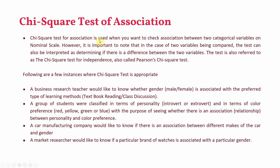Chi-square test for association is used when you want to check association between two categorical variables on the nominal scale. If you want to check for relationship between two variables on ordinal, continuous, interval, or ratio scale, you will have to go for correlation analysis. The test can also be interpreted as determining differences between two nominal variables, and is also referred to as chi-square test for independence, or Pearson chi-square test.